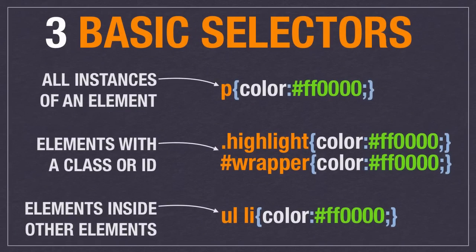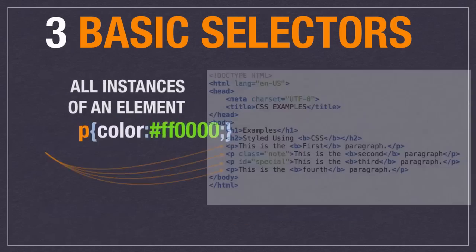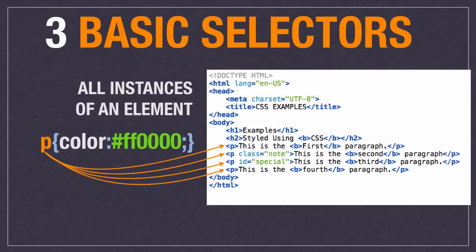There are three basic kinds of selectors. The first is selecting all instances of an element. When you write P as your selector, it goes through and looks for all P elements and applies that style to all of them. So if the declaration is color red, all the text inside all paragraphs would be red. It applies those declarations to all paragraph elements on the page. If you wanted to style an H2, you would just write H2 instead of P.